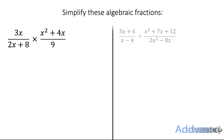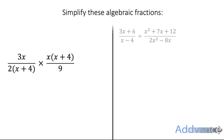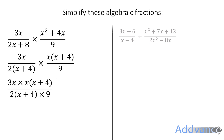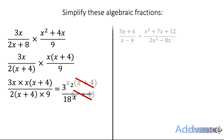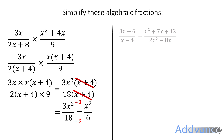Now we're going to multiply algebraic fractions. We factorise the top and the bottom, then multiply everything on the top and everything on the bottom — that's how we multiply fractions. We simplify the numbers, and x plus 4 appears as a factor on both top and bottom, so they cancel. We're left with 3x squared over 18, and we divide by 3 and by 3, giving us x squared over 6 as the final answer.